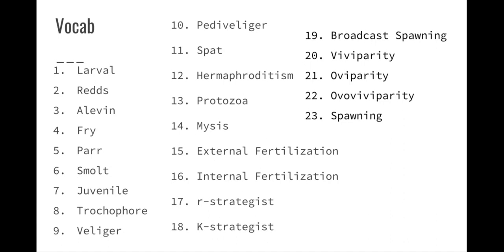Chapter 10: marine reproductive behavior. Your vocabulary: larval, reds, alevins, fry, parr, smolt, juvenile, trochophore, veliger, pediveliger — pedi means foot — spat, hermaphroditism, hermaphrodite, protozoa, mysis, external fertilization, internal fertilization, R strategist, K strategist, broadcast spawning, viviparity or viviparity however you want to pronounce it, oviparity, ovoviviparity, and spawning.